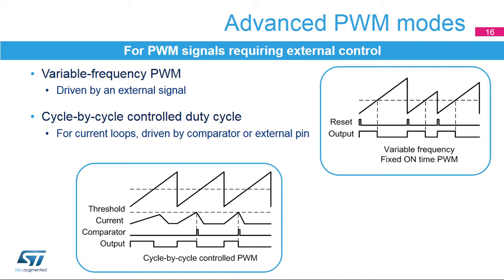This slide presents specific PWM modes where either the frequency or the duty cycle can be driven by external signals. The timer can provide variable frequency signals using an external reset signal connected either on the ETR or on the channel 1 or 2 inputs. The purpose of this mode is to provide a signal with a fixed on or off time and a continuously adjusted frequency controlled by hardware. The timer provides control for the on or off time using the compare register, while the auto-reload register guarantees that the PWM will not stop if the external reset is missing. This technique is used for transition mode PFC or power factor controller and current-controlled digital LED lighting.